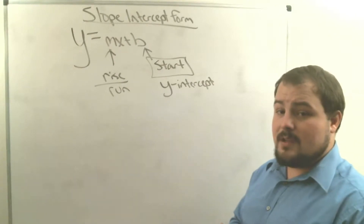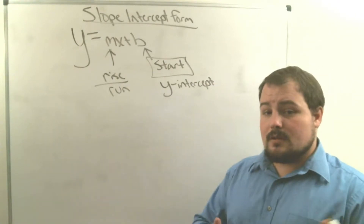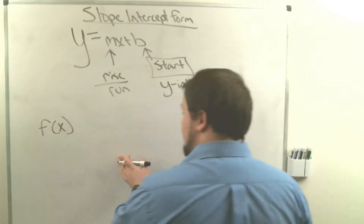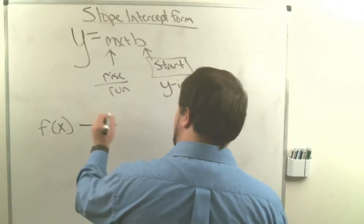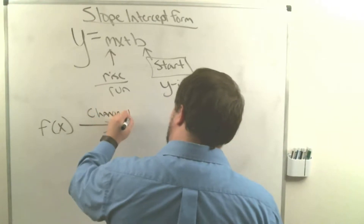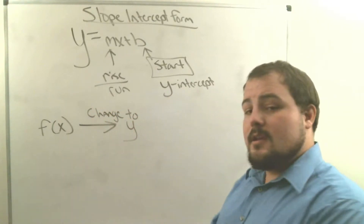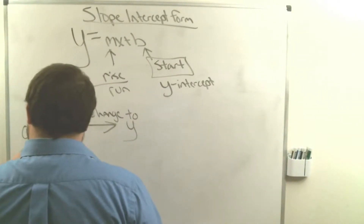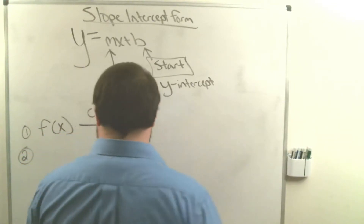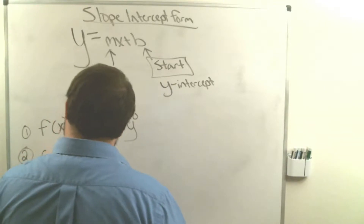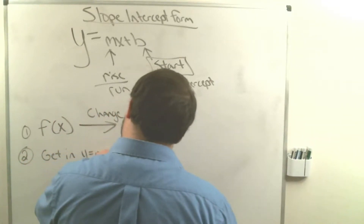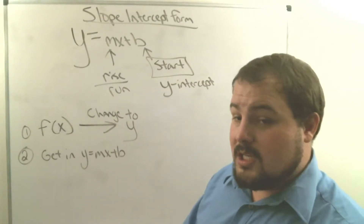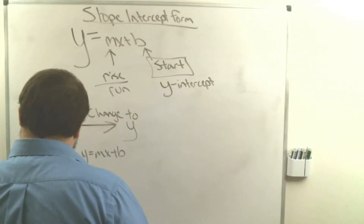Hopefully you've seen slope-intercept form in Algebra 1 or a previous grade, but if not, I'm going to teach you how to use it today. The first thing we do is take an equation that says f of x and change f of x to the letter y. That's step one. Step two: if we have to, we get y by itself so the equation is in y equals mx plus b form.